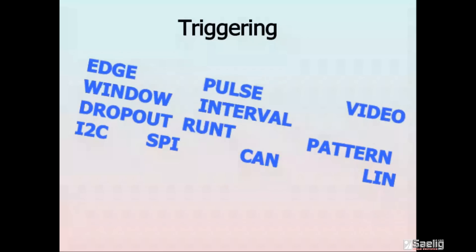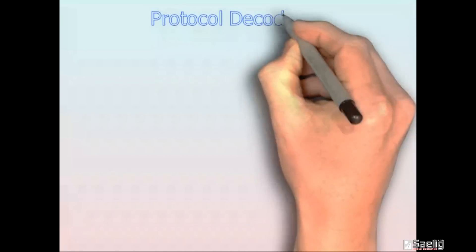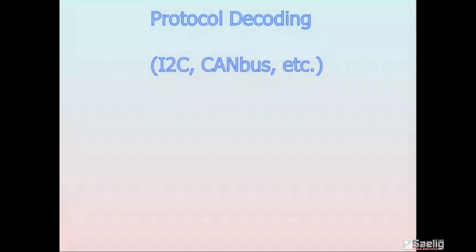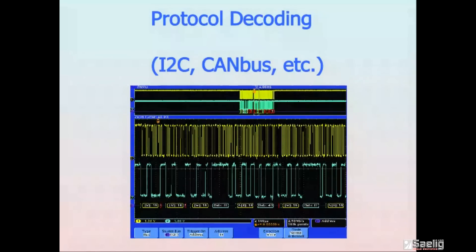Some scopes include serial protocol decoding so you can decipher I2C or CAN bus messages. But beware, some manufacturers charge extra for these decoders.